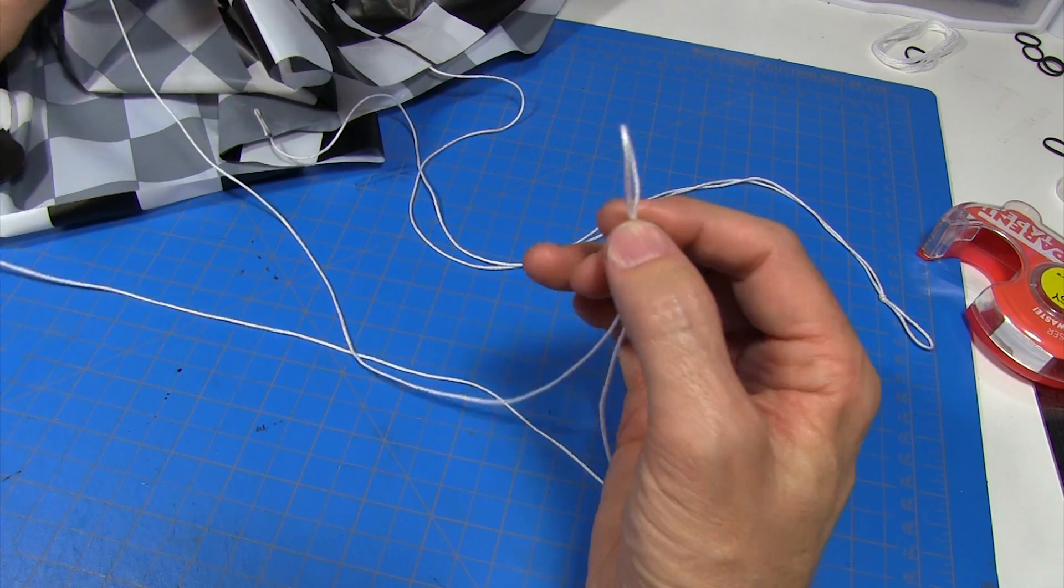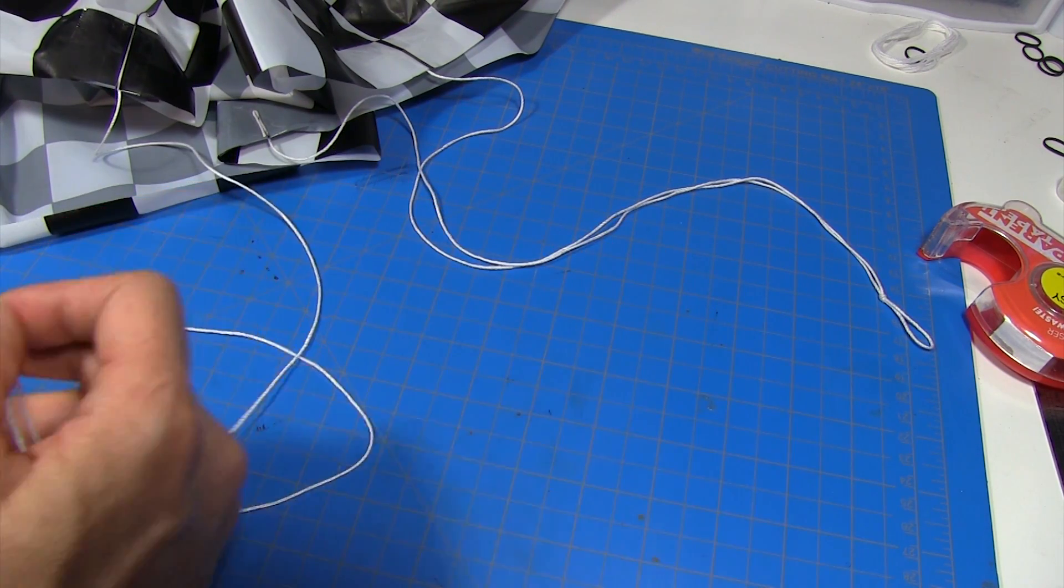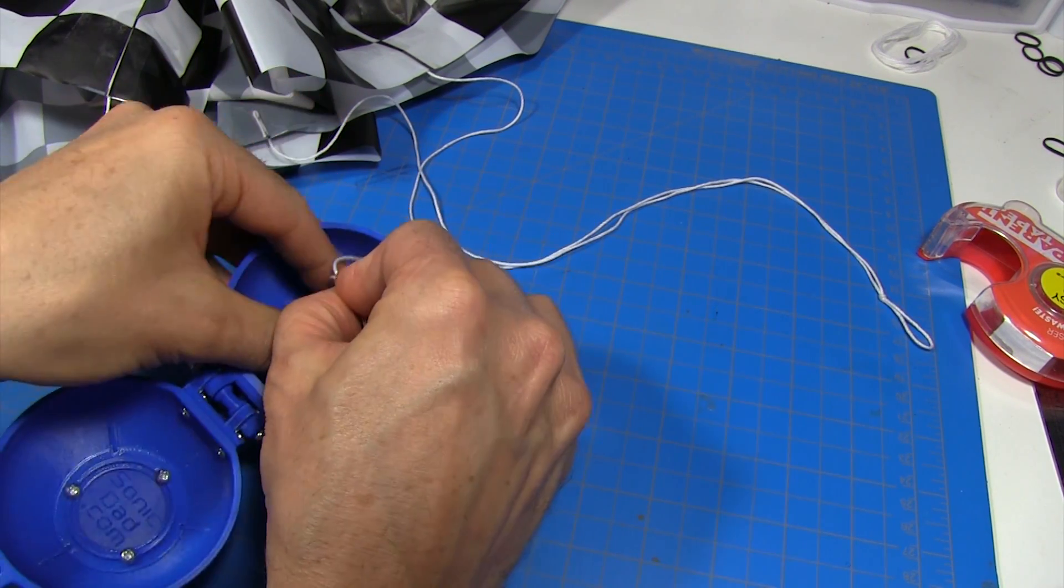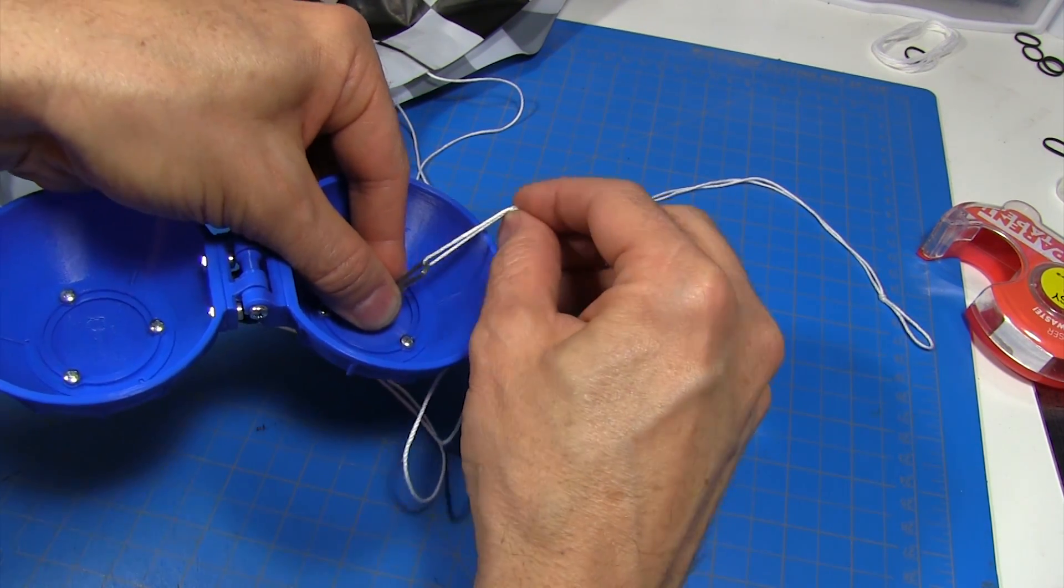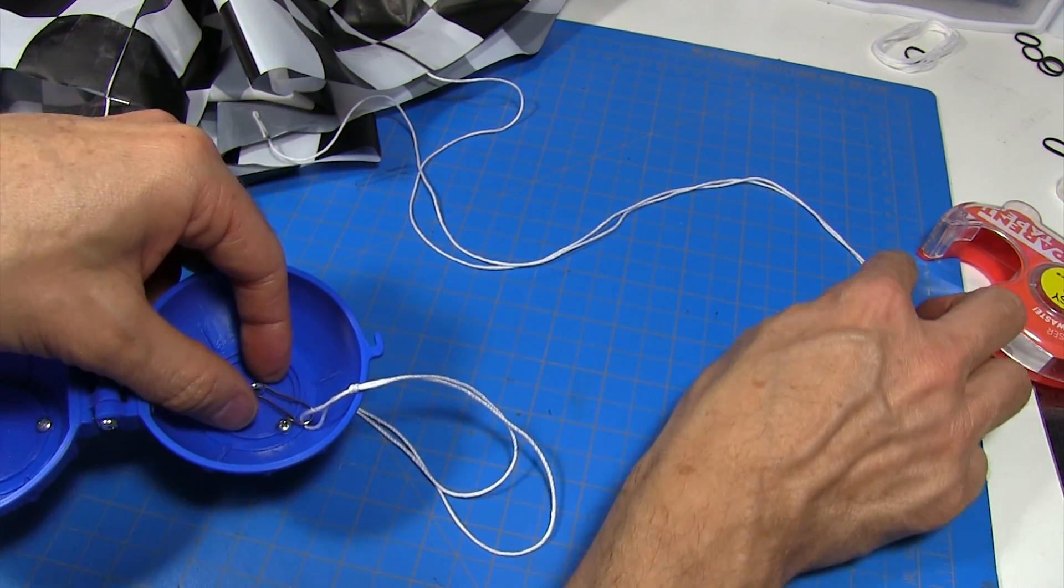Now we've got a knot in the end of each shroud line, it's ready to attach to the ball. We want to make sure we don't have any twists or tangles in our shroud line. Holding the end of it, we're going to attach it to the metal hook. What I'm going to do is just loop it over like that and then pull it. It's that easy. And we'll do the other one.